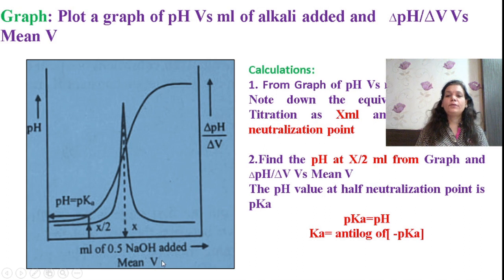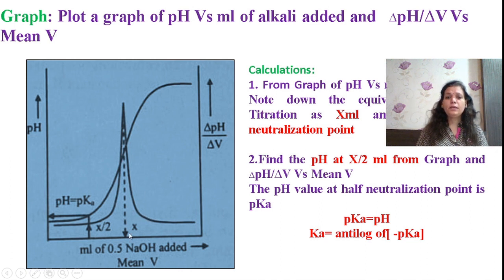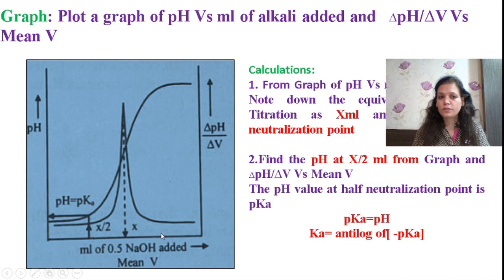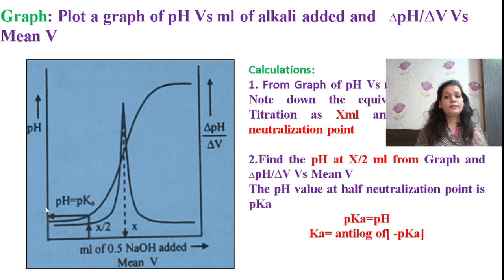From the first graph, you will see a continuous increase in pH. From the second graph, a distinct peak will appear — the center of this peak, where delta pH / delta V is highest, gives the equivalence point of titration at x ml. Taking half of x, that is x/2 ml, gives the half neutralization point. The pH value corresponding to x/2 ml is nothing but the pKa — the dissociation constant of your weak acid.